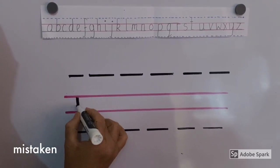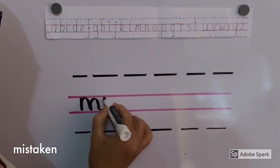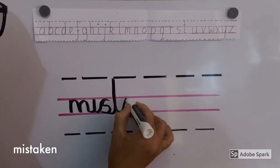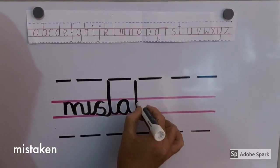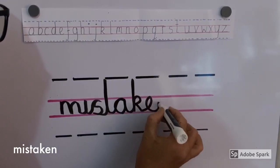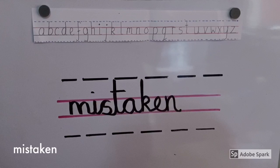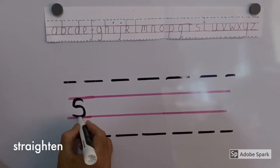Mistaken. M, I, S, T, A, K, E, N. Mistaken. Mistaken means wrong in one's opinion or judgment. Mistaken.